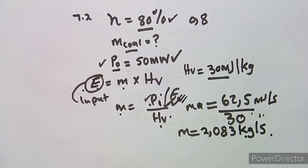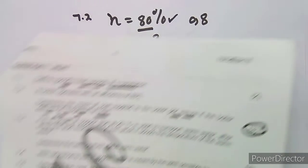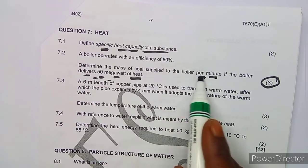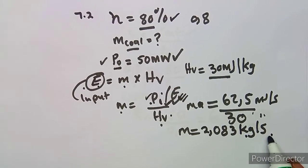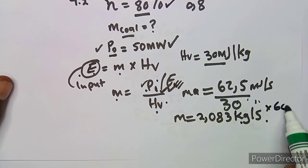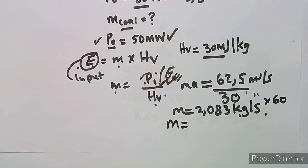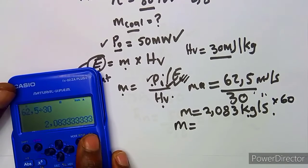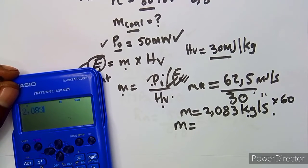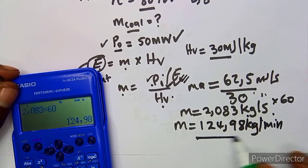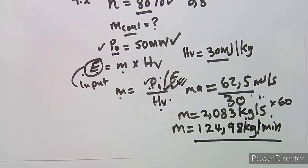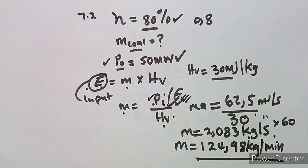But the question asks for mass per minute, not per second. To convert from kg/s to kg/min, multiply by 60. So mass equals 2.083 times 60, which gives approximately 124.98 kg per minute. In one minute there are 60 seconds, which is why we multiply by 60.